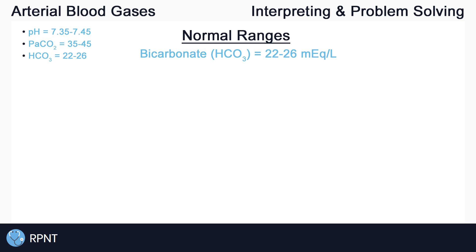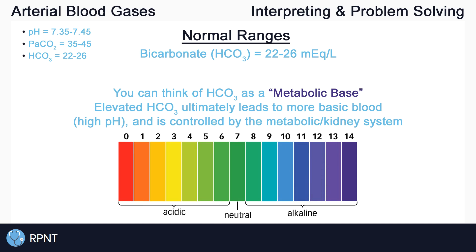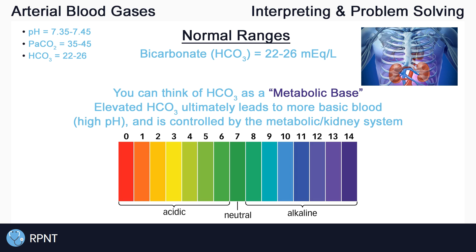Lastly, we have HCO3, which is bicarbonate. The normal range for HCO3 is 22 to 26 mEq/L. You can think of HCO3 as a metabolic base, which is kind of the opposite of PaCO2. High levels of HCO3 in the blood ultimately leads to more basic blood, and how our body regulates HCO3 is by using the metabolic system, or the kidneys — that's where we get 'metabolic base' from. Simply put, if we have too much HCO3 in the blood, we enter alkalosis because the kidneys are not getting rid of enough HCO3. A high level of HCO3 means the kidneys are raising the pH, while a low level means the kidneys are lowering the pH.